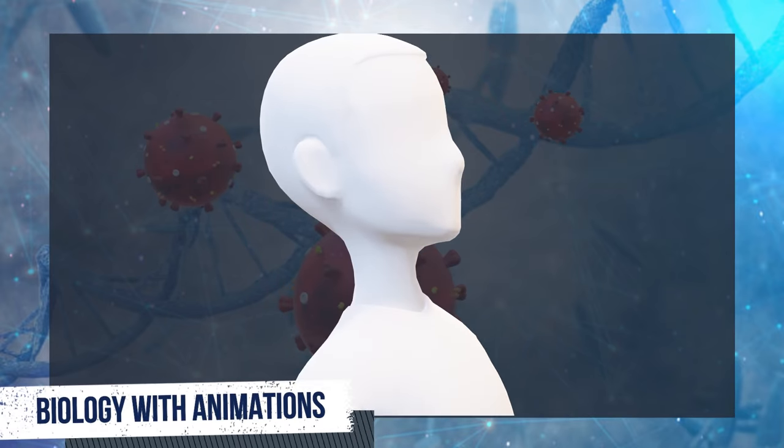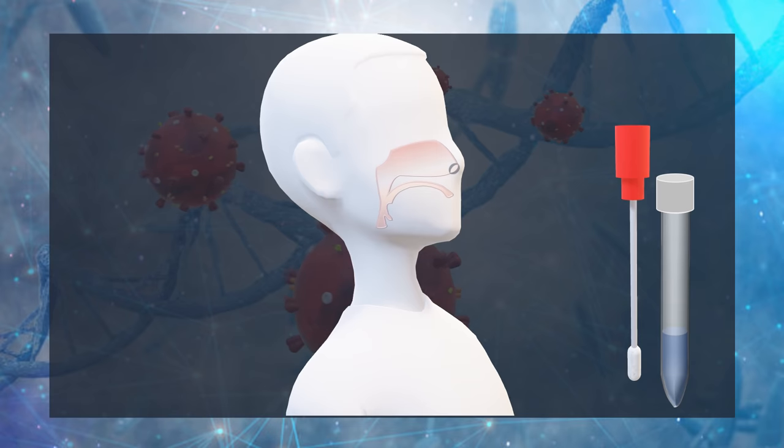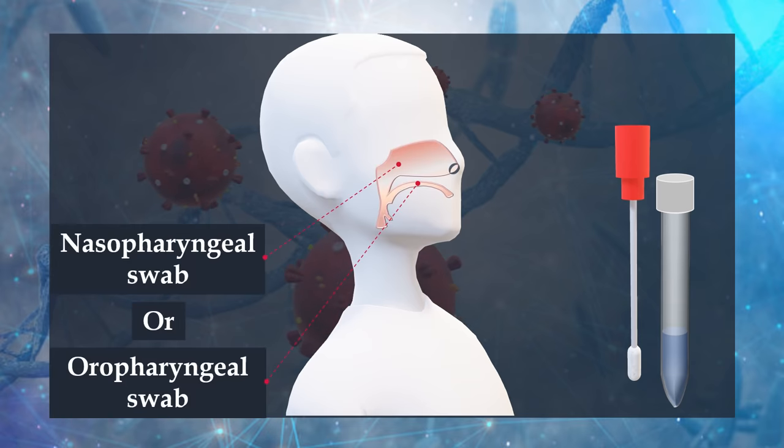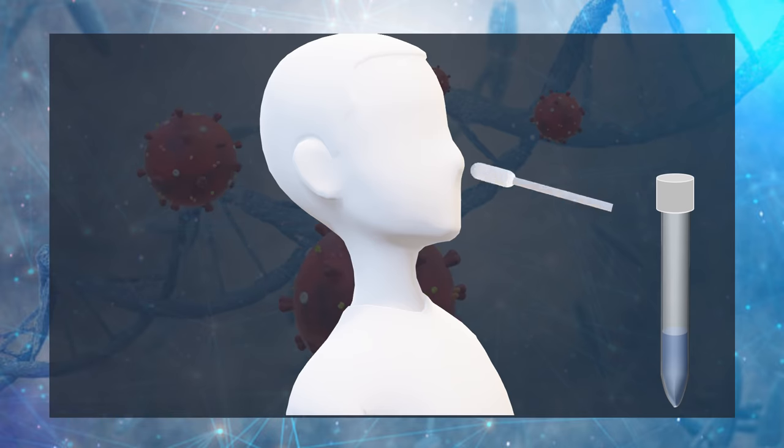To start a test, the samples can be collected by a nasopharyngeal swab or an oropharyngeal swab. For nasopharyngeal specimen, the swab is inserted in the nostril and gently moved forward into the nasopharynx, then it is rotated for a specified period time to collect secretions that contain the virus.